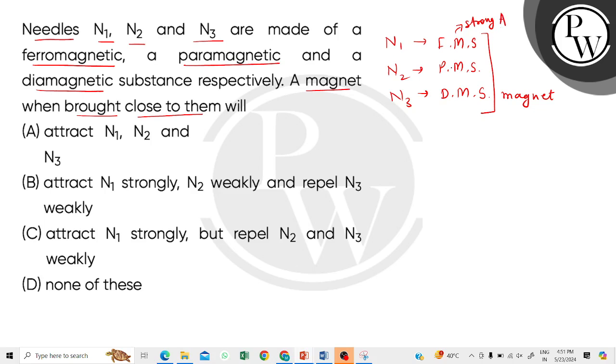Paramagnetic substances are weakly attracted by the magnet, and diamagnetic substances are weakly repelled.